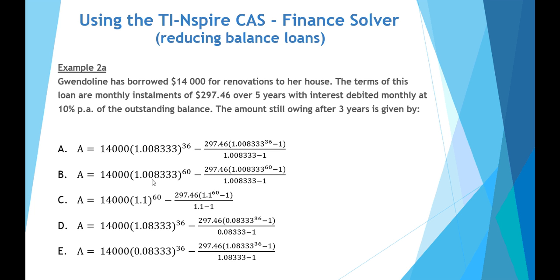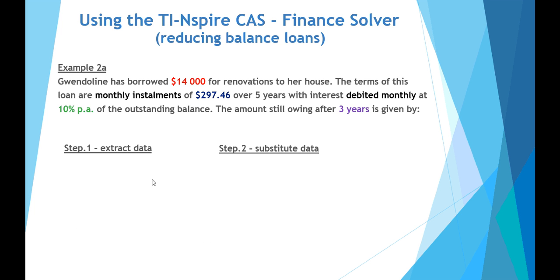Second example, example 2A. Gwendolyn has borrowed $14,000 for renovations to her house. The terms of this loan are monthly installments of $297.46 over five years, with interest debited monthly at 10% per annum on the outstanding balance. The amount still showing after three years is given by, again, we have a range of possible annuities formula equations.